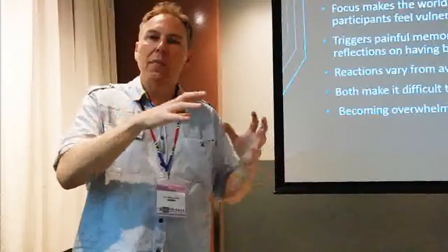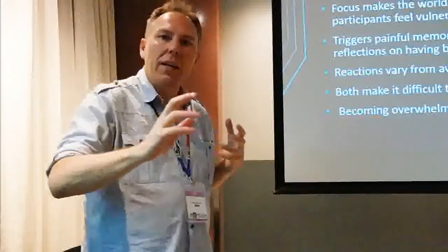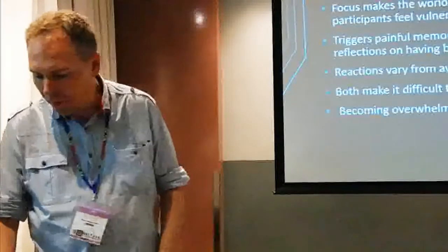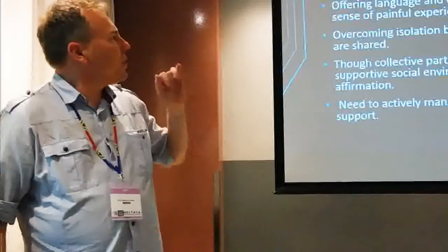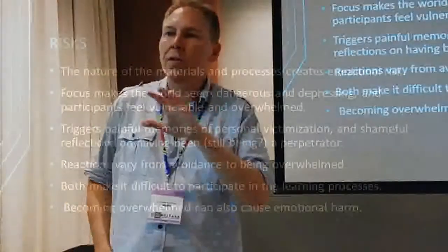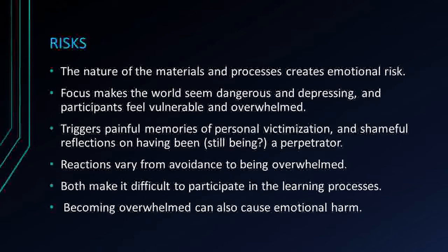That's one example of probably 20 or 30 different things we look at, where we engage common sense traditions and different ways of thinking. The question of risks is important here, because teaching this course is dangerous in a particular way — it does two things. Firstly, the overwhelming focus on reading about the horrible things people do makes the world seem depressing and terrifying. Secondly, specific issues trigger people — people who are survivors of sexual violence, of child abuse — and it becomes very overwhelming for them.